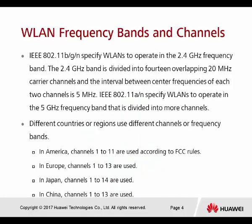IEEE 802.11 B, G, and N specify WLAN to operate in the 2.4 GHz frequency band. The 2.4 GHz band is divided into 14 overlapping 20 MHz carrier channels, so in the 2.4 GHz band we have a total of 14 channels. Each channel occupies 5 MHz. 802.11A specifies WLAN to operate in the 5 GHz frequency band, which is divided into even more channels than 2.4 GHz. Different countries or regions use different channels or frequency bands.